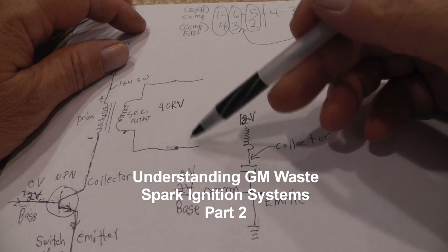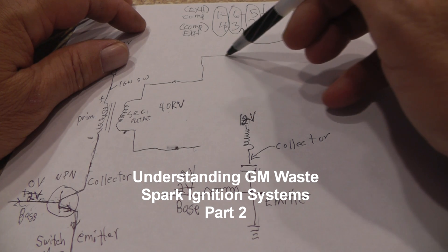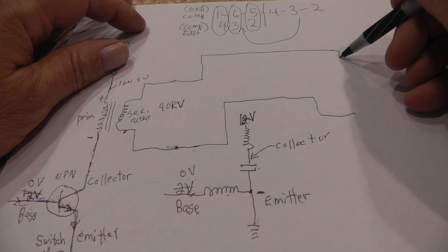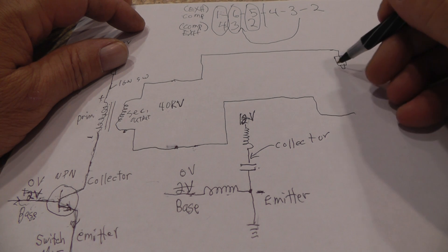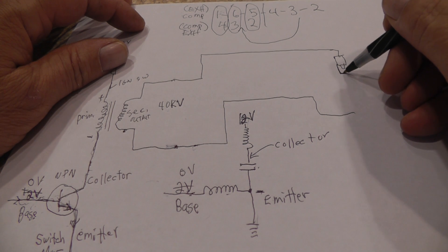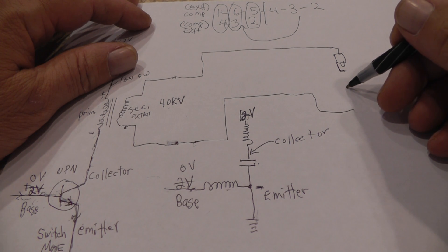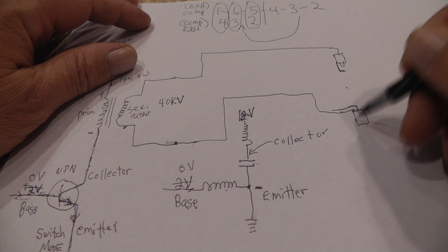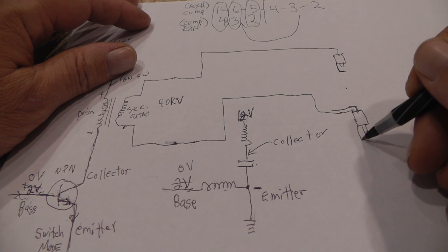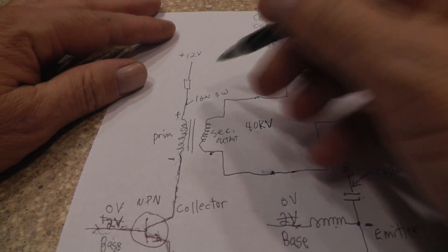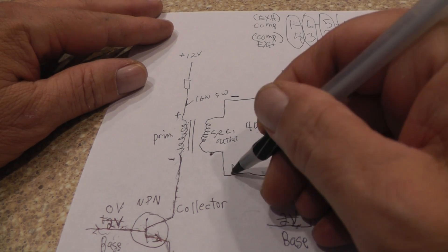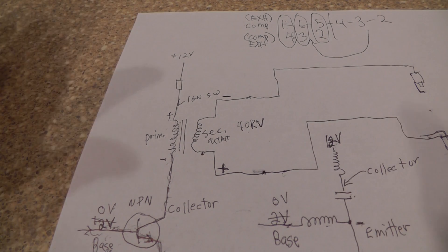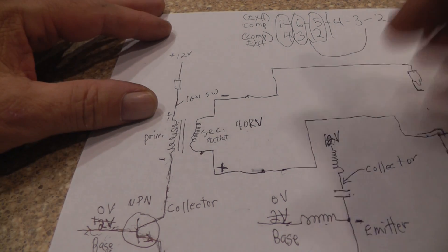Let me draw the spark plugs right up here. There's my center electrode and there's my side electrode. Now let me draw another one. There's my center electrode, there is my side electrode. Let's say this one is minus up here and this one has a positive polarity. I do not know for sure what the polarity is, but for our discussion it really doesn't matter — it's just that it would be backwards.